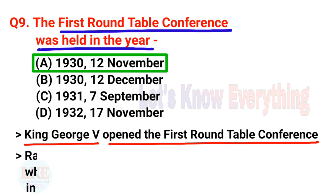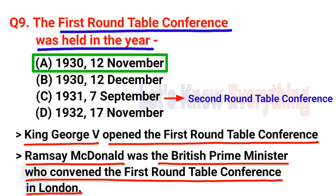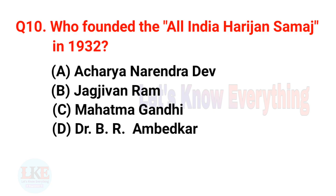Question number nine: King George V opened the first Roundtable Conference. Ramsay MacDonald was the British Prime Minister who convened the first Roundtable Conference in London. Remember: in 1931, on 7th September, the second Roundtable Conference was held in London, and in 1932, on 17th November, the third Roundtable Conference was also held in London.